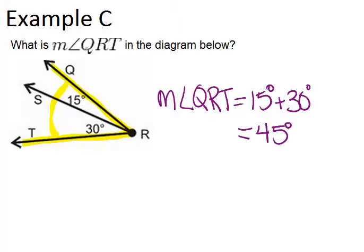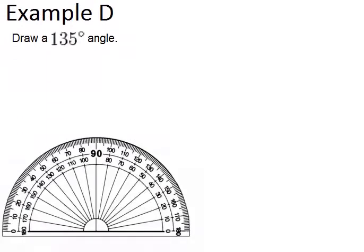Let's look at the last example, example D, which says draw a 135 degree angle. We have a protractor to help. The first thing to do when drawing an angle is to draw one line segment that matches the bottom of the protractor, passing through zero degrees. You could go to the right or left, either way.